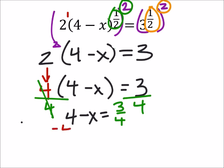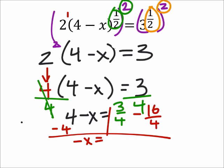Now I'm going to need to subtract four from both sides, and I've got negative x equals three fourths. That four I'm going to make it 16 fourths, which is what four is, but I have common denominators now. That's going to give me negative 13 fourths.